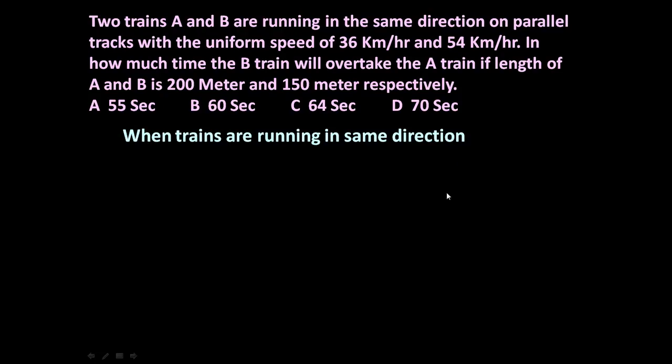To answer this question, the important point is: when trains are running in same direction, the relative speed between the trains will be VB minus VA - velocity of B minus velocity of A, or velocity of fast train minus velocity of slow train. Because we know B is moving with 54 and A is moving with 36 kmph, velocity of B is more. So relative speed equals faster train speed minus slower train speed.